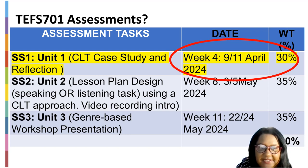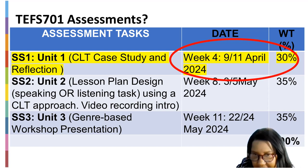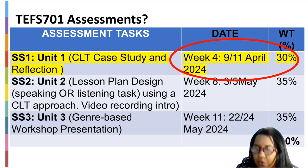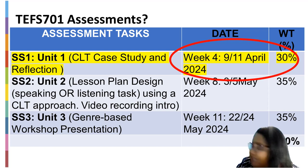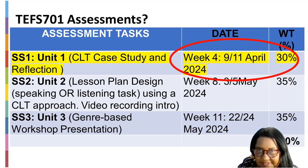SS3 will be a genre-based workshop presentation, due in week 11 — the 25th of May 2024 for first additional language students, and the 22nd of May for home language students. That also counts 35%, bringing your final mark to 100%.